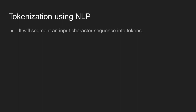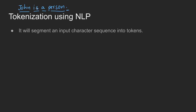Let's take a look at an example: 'John is a person.' We have John's word, 'is' his word, and 'person's' word. In this case, 'John is a person' — there are 5 words.